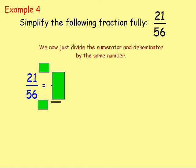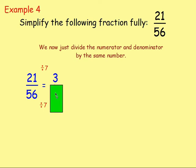Example four: simplify the following fraction fully. We've got twenty-one over fifty-six. Think about what times table they are both in. Seven! You can divide them both by seven. Twenty-one divided by seven gives you three, and fifty-six divided by seven gives you eight. So you get three eighths - that is our simplified fraction. Always check: can you simplify any further? No - you can't divide three and eight by the same number apart from one.